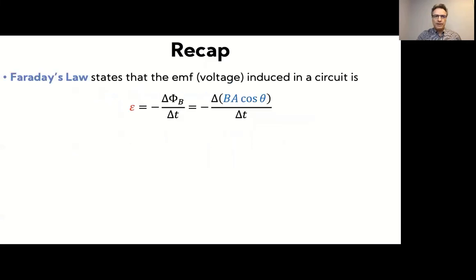So to start off, let's recap Faraday's law. Faraday's law says that if we have a closed loop that encloses a certain area, there is an induced EMF in that circuit. And that induced EMF is given by Faraday's law. So the EMF is minus the rate of change of this quantity phi B, which is the magnetic flux.